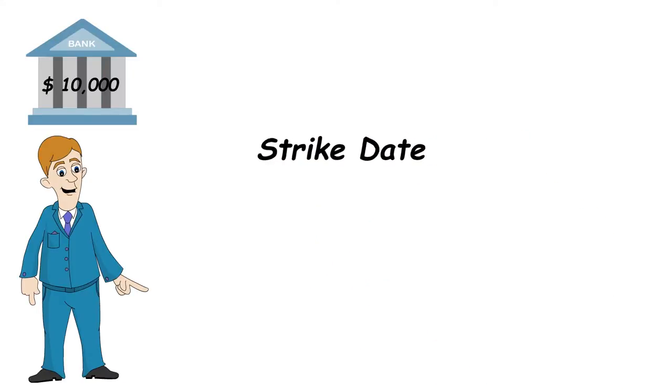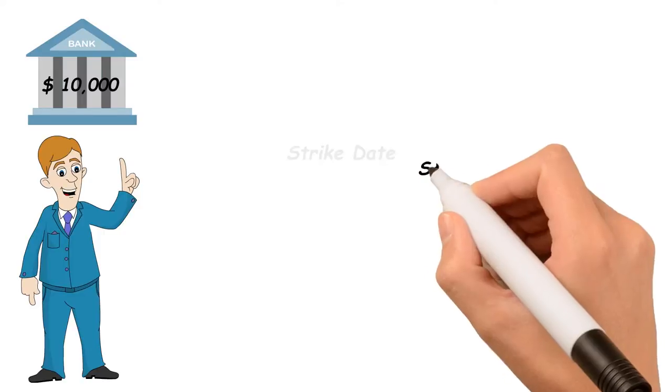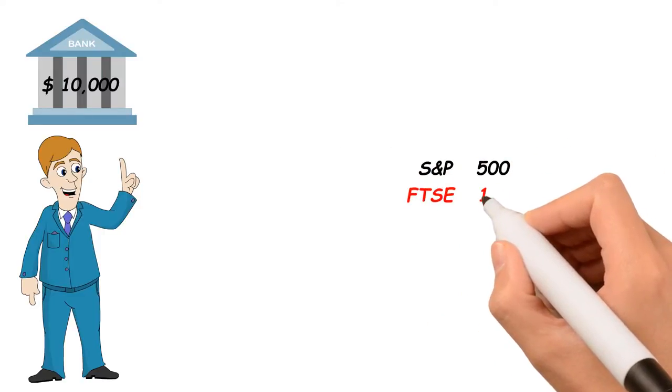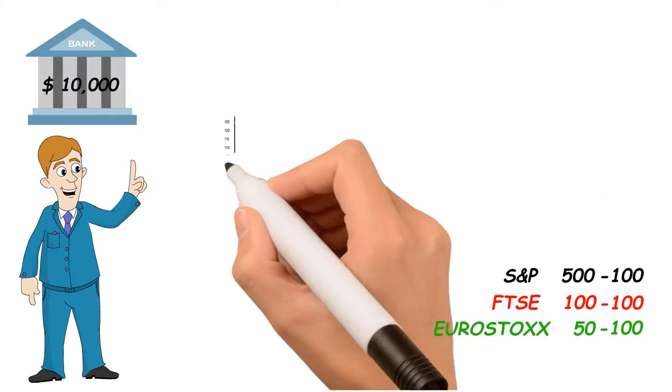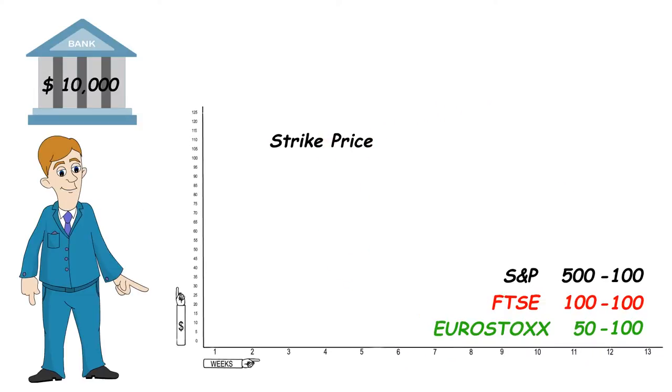We then take the price of the three global indexes that you would like the note to track. For now, let's say the indexes are S&P 500, FTSE 100, and Eurostoxx 50, and the prices of these indexes are all 100. This would then become the strike price.